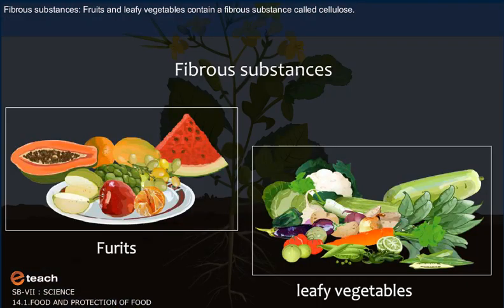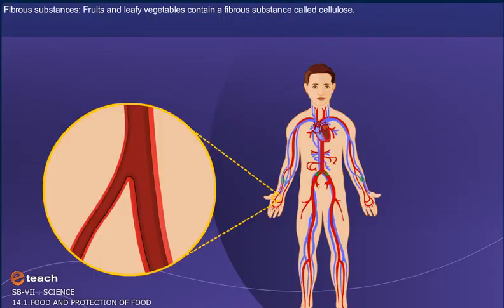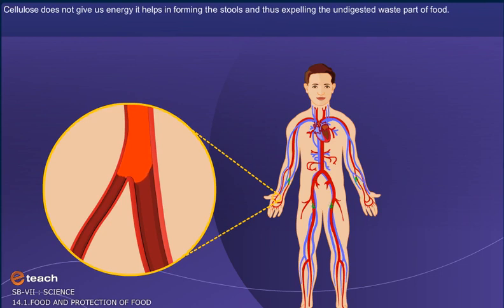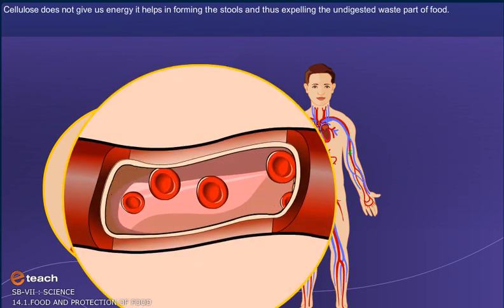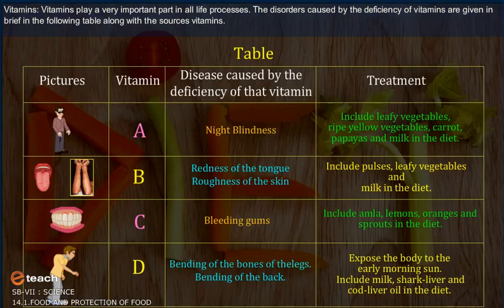Fibrous substances. Fruits and leafy vegetables contain a fibrous substance called cellulose. Cellulose does not give us energy; it helps in forming the stools and thus expelling the undigested part of the food. Vitamins play a very important part in all life processes. The disorders caused by the deficiency of vitamins are given in brief in the following table, along with the sources of vitamins.